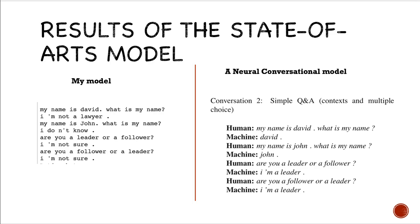This is kind of the result of the state-of-the-art model. The model on the left side is our model, and the model on the right side is from a paper, a neural conversational model, which is proposed by Google in 2017.